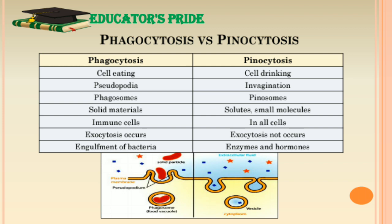There are various differences between phagocytosis and pinocytosis. Phagocytosis is also known as cell eating, whereas pinocytosis is known as cell drinking. Formation of pseudopodium occurs in phagocytosis, whereas pinocytosis occurs via invagination. Phagosomes and pinosomes are formed in phagocytosis and pinocytosis respectively. Phagocytosis involves transport of solid materials, whereas pinocytosis involves transport of solutes and small molecules. Phagocytosis occurs in specialized immune cells such as macrophages, monocytes, and neutrophils, whereas pinocytosis occurs in all cells. Exocytosis occurs in phagocytosis but not in pinocytosis. Examples of phagocytosis include engulfment of bacteria; examples of pinocytosis include enzymes and hormones.